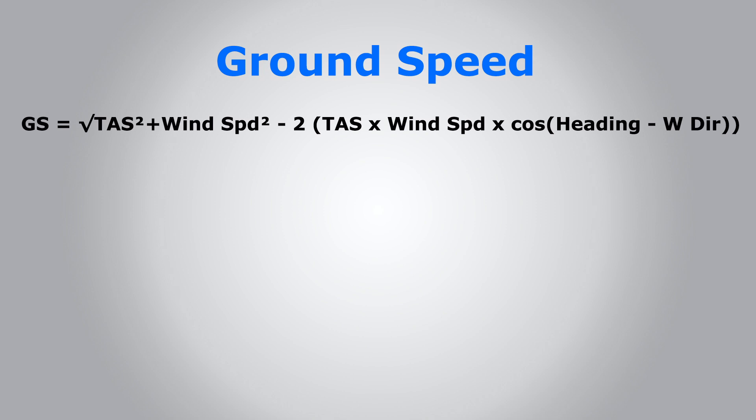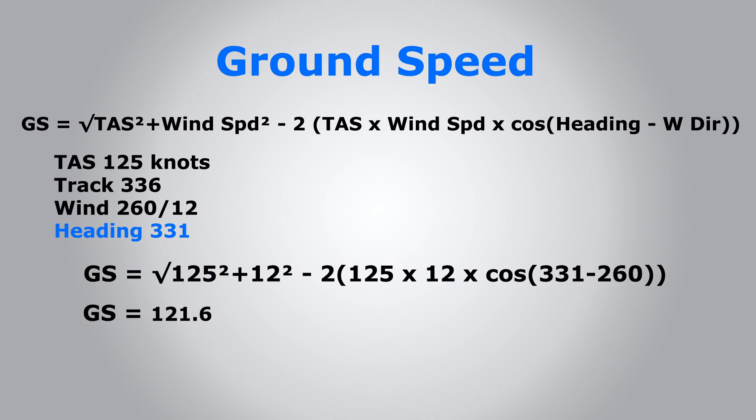So again, let's do an example. Let's substitute our givens into the formula: we have TAS of 125 squared plus the wind speed squared minus 2 times TAS, which is 125, times 12, times the cosine of the heading previously found, 331, minus 260. We get about 121.6, so we'll round it up to 122.